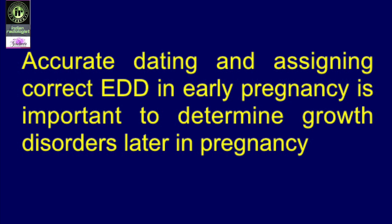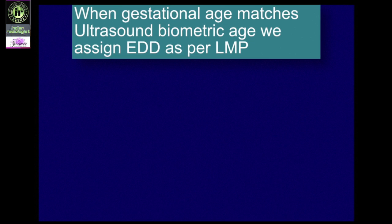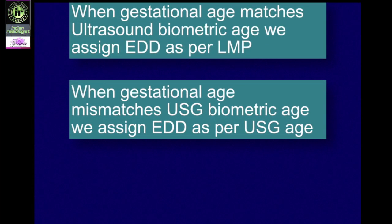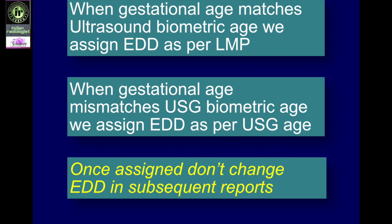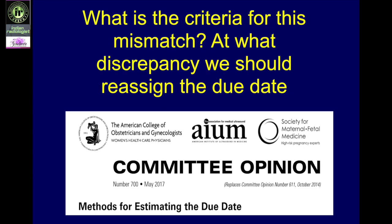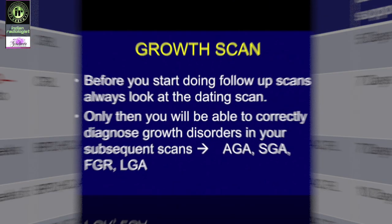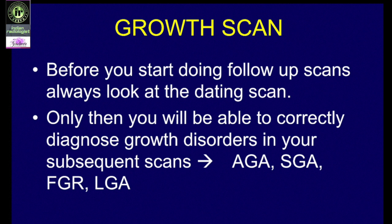As seen in our previous video, when the gestational age matches the ultrasound biometric age we assign the EDD as per LMP. When in early pregnancy the gestational age mismatches the ultrasound biometric age, we assign the EDD as per ultrasound age, and once assigned we don't change the EDD in subsequent reports. So during growth scans it is very important to always refer back to the early pregnancy dating scan — only then will you be able to correctly diagnose growth disorders in subsequent scans.